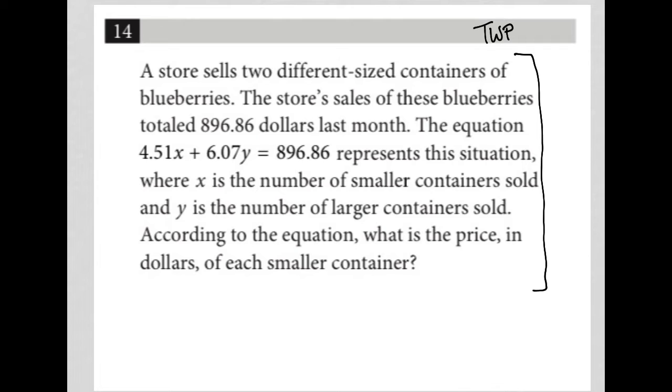The first sentence here says a store sells two different sized containers of blueberries. I'm actually going to write down like size A and size B. The store's sales of these blueberries totaled $896.86. Okay.